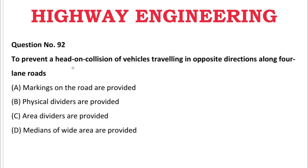Next question: To prevent a head-on collision of vehicles traveling in opposite directions along four-lane roads — A: markings on the road are provided, B: physical dividers are provided, C: area dividers are provided, D: medians of wide area are provided. The correct answer is D, medians of wide area.